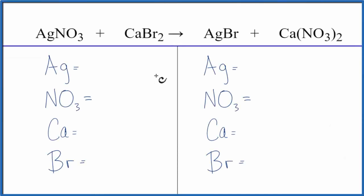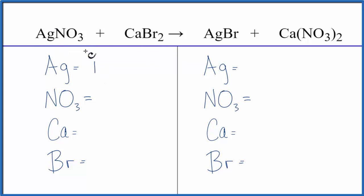In this video, we'll balance the equation AgNO3 plus CaBr2 — that's silver nitrate plus calcium bromide. Let's count the atoms up. We have one silver, and then this nitrate, this NO3,